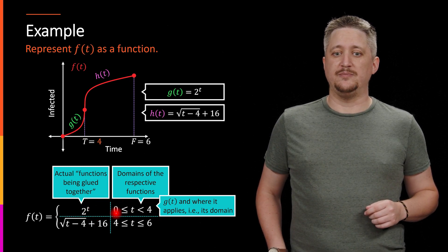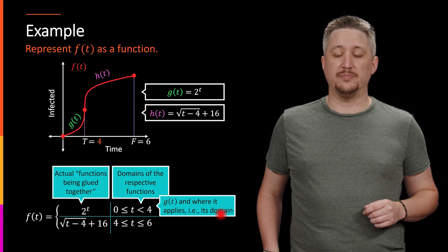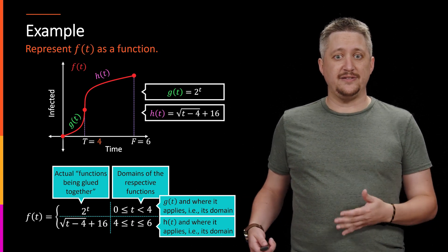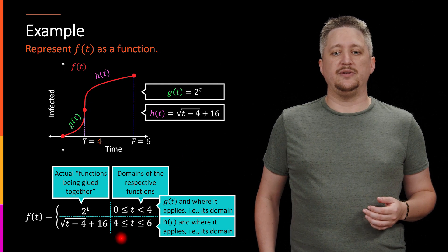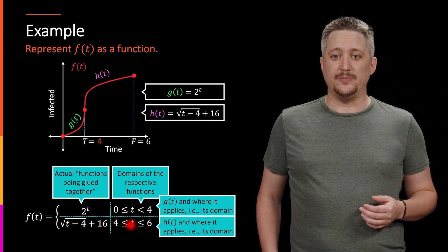And it is applied from zero to four. So the first row is really G of T and where it applies, meaning its domain. The second one, same deal. It's going to be the H of T, that square root function, and it's being applied between four and six, between the T and the F. So that's its domain.